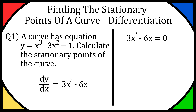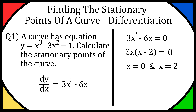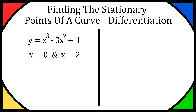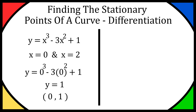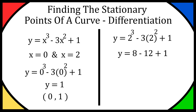So 3x squared minus 6x is equal to 0. We're going to take out a 3x, leaving us with 3x times (x minus 2). So x will either be 0 or equal to 2. Now we have the x values of the stationary points. We can sub these into the original equation y equals x cubed minus 3x squared plus 1. If x equals 0, y equals 0 minus 0 plus 1, so y equals 1 — giving our first stationary point (0, 1). For x equals 2, y equals 8 minus 12 plus 1, so y equals minus 3. Our second stationary point is (2, −3).